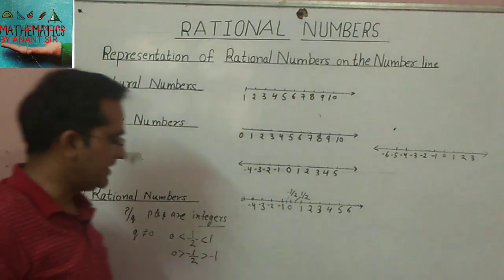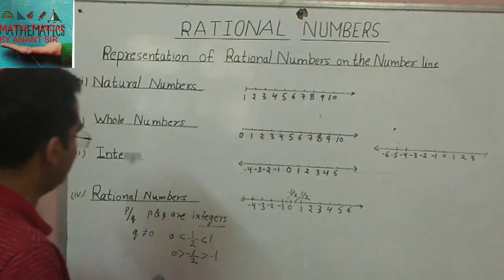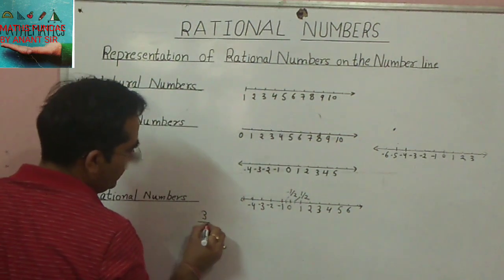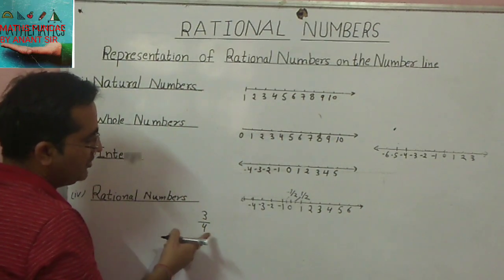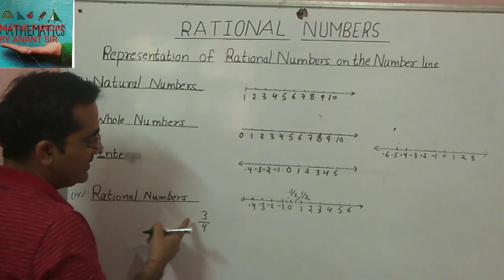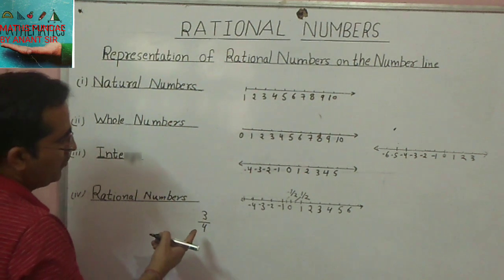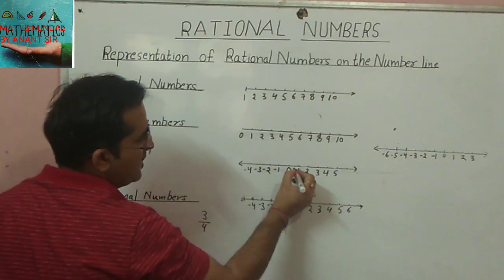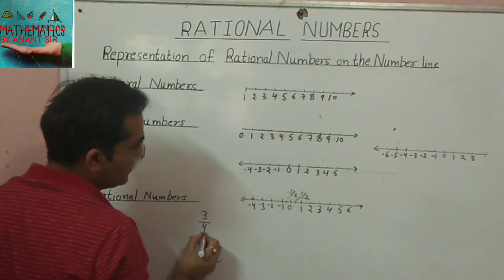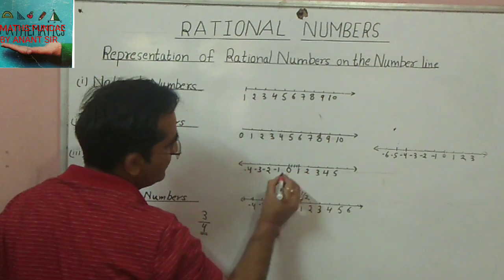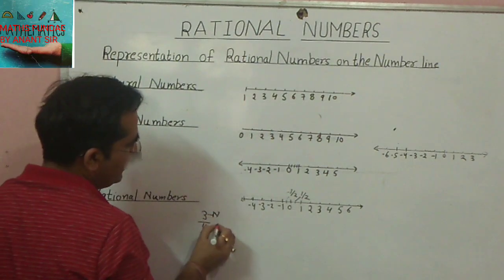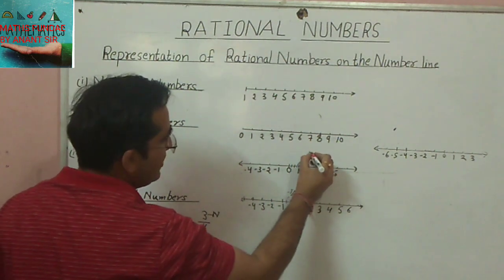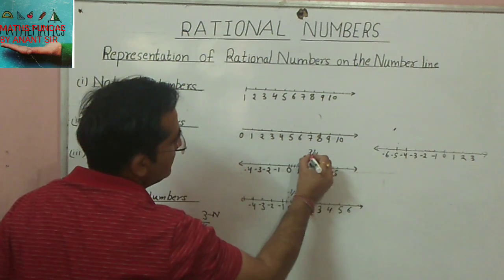Next, take the rational number 3 upon 4. Since the numerator is smaller than the denominator, this value is always less than 1 and greater than 0, so 3 upon 4 lies between 0 and 1. We divide the segment between 0 and 1 into 4 equal parts (denominator is 4), then count 3 parts to the right from 0.